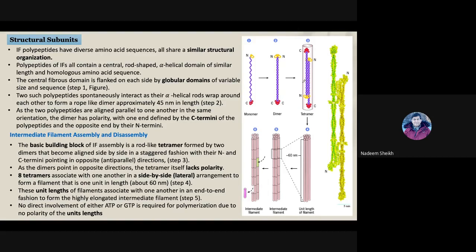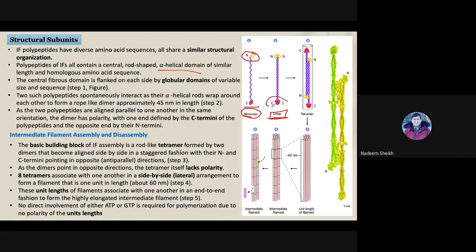Regarding the structural subunit of intermediate filaments: every polypeptide has an N-terminal and a C-terminal. Two such monomeric polypeptides come together to form an alpha-helical structure called a dimer. This dimer is a polar structure because one end has the N-terminal and the other has the C-terminal.